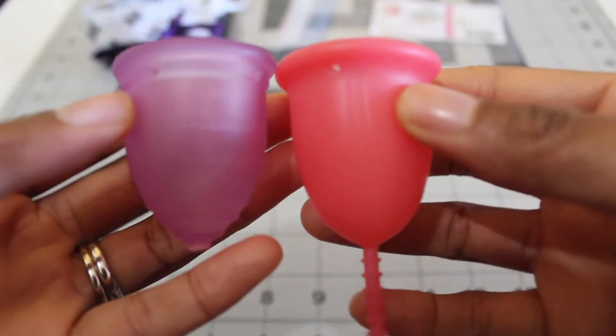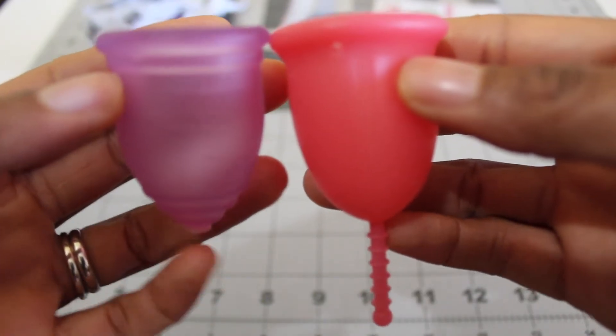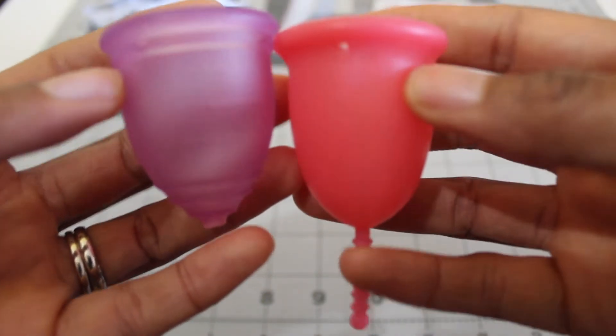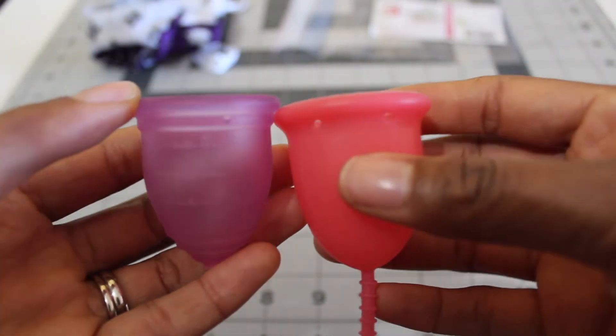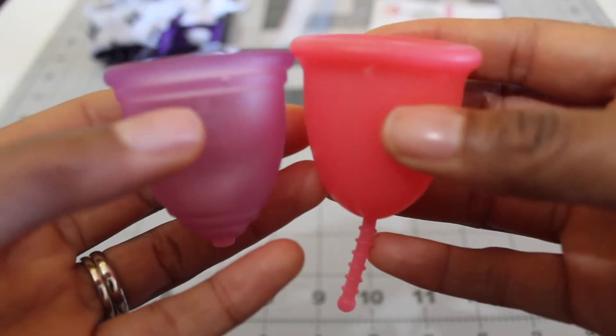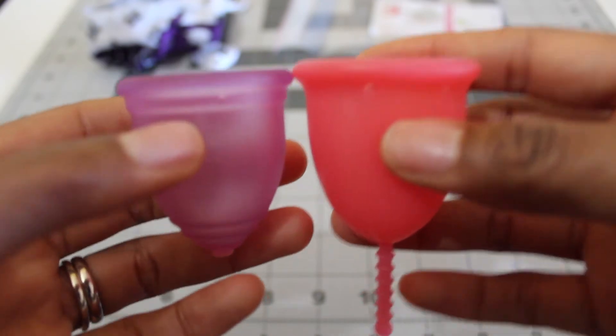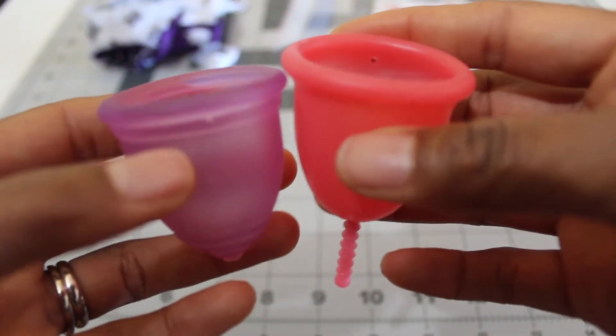Kind of a similar shape. Ruby has a little bit more of a pointed base here. Isabel is pretty round. But yeah I think similar shape. I think the Ruby might have slightly lower capacity than Isabel but I'll check that and add in the description box for sure.